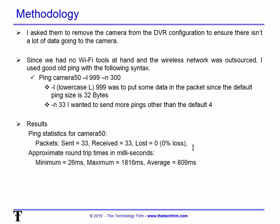The results: we sent 33, received 33, lost zero. The DVR actually reported a small loss of maybe three or five, which we thought was okay but didn't mean much. What we really wanted to look at was the latency: minimum 26 milliseconds, maximum 1816 milliseconds — almost two seconds — and an average of 809 milliseconds. That is quite the issue. I was encouraged that the loss was zero, which tells me it may just be a signal strength issue rather than the camera being totally out of range.